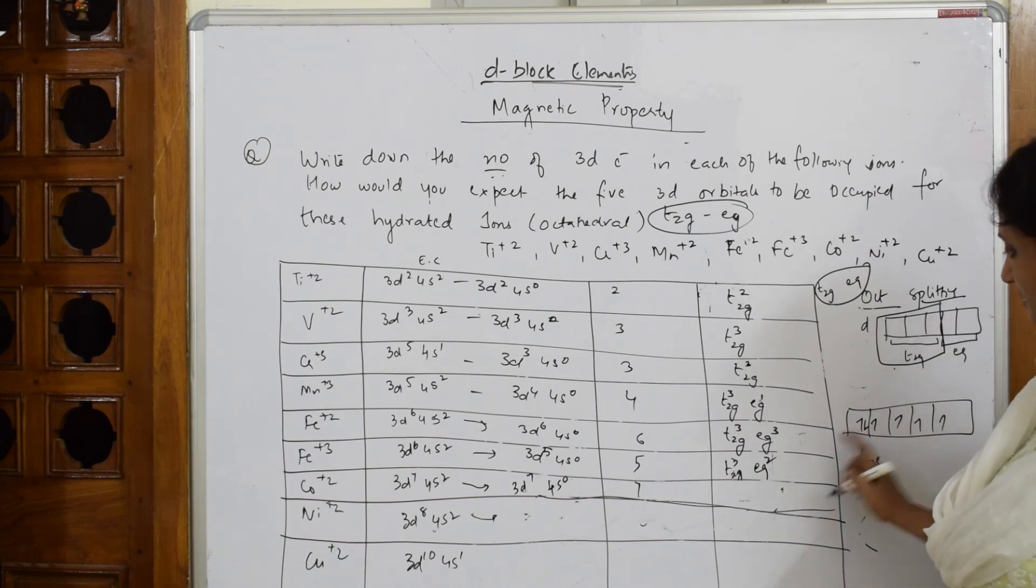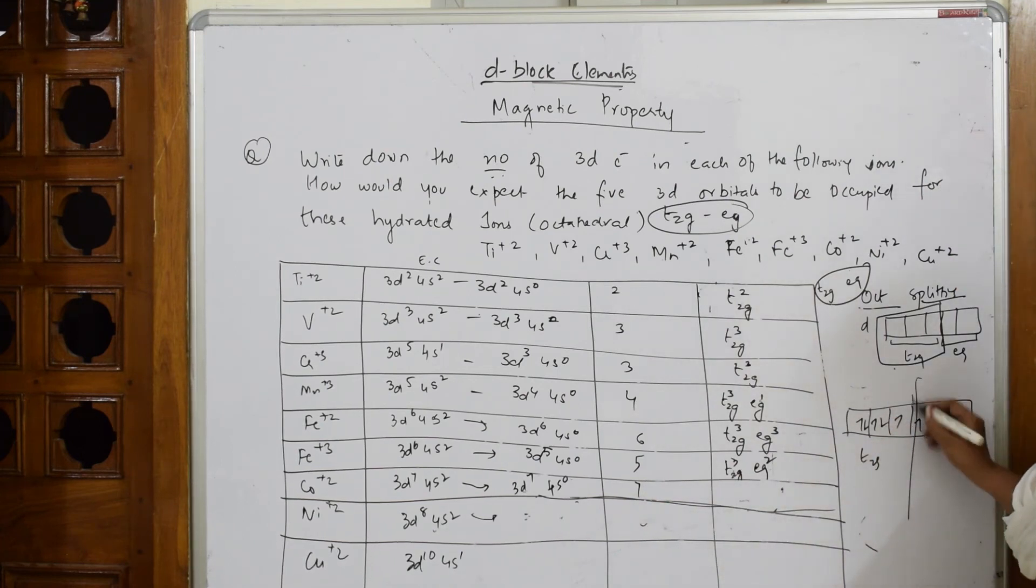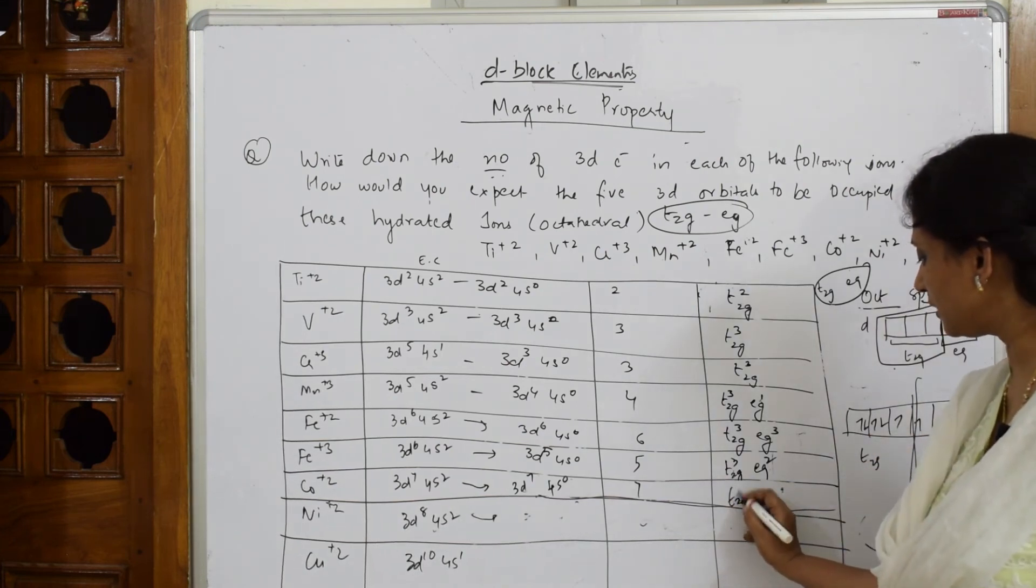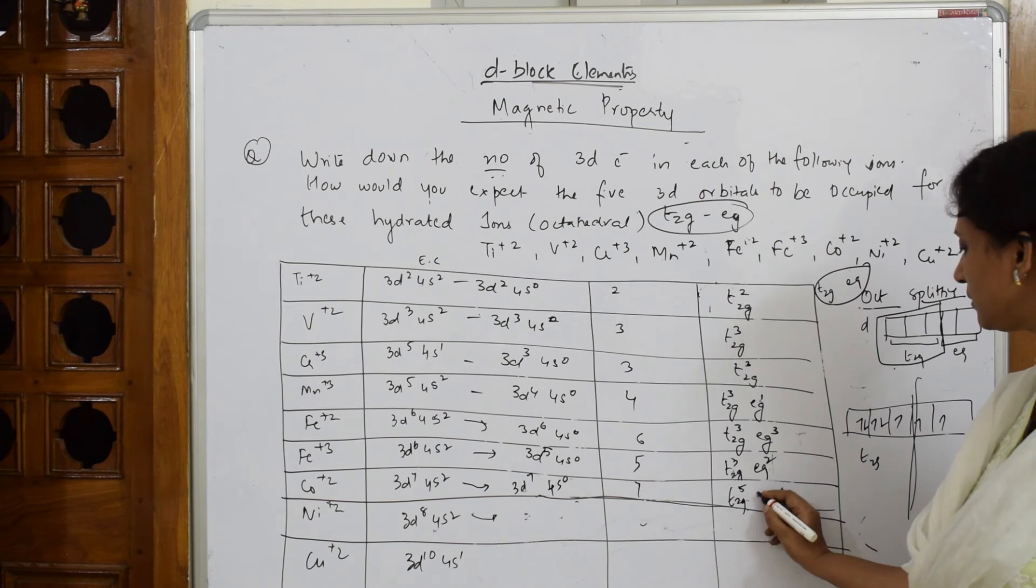That is the sixth one. Now, seventh one like this. The second electron. Now, how many do we have? We have T2G total of 5. So T2G will be 5. EG will be 2.